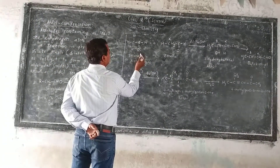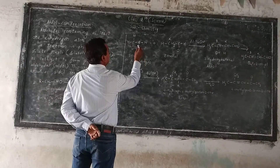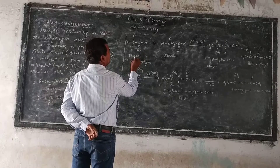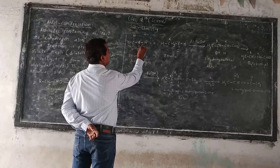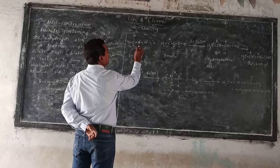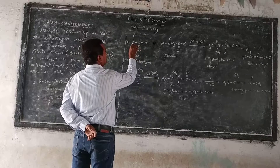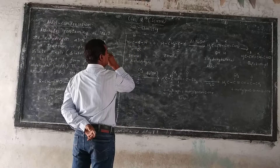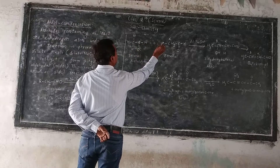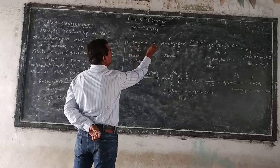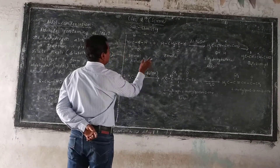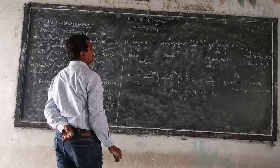In this reaction, acetaldehyde is taken as an example. Its IUPAC name is ethanal: CH3CHO. Here, CHO is the functional group, so this carbon is the alpha-carbon, and the hydrogen attached to this carbon is the alpha-hydrogen atom. Two molecules of aldehyde are taken.